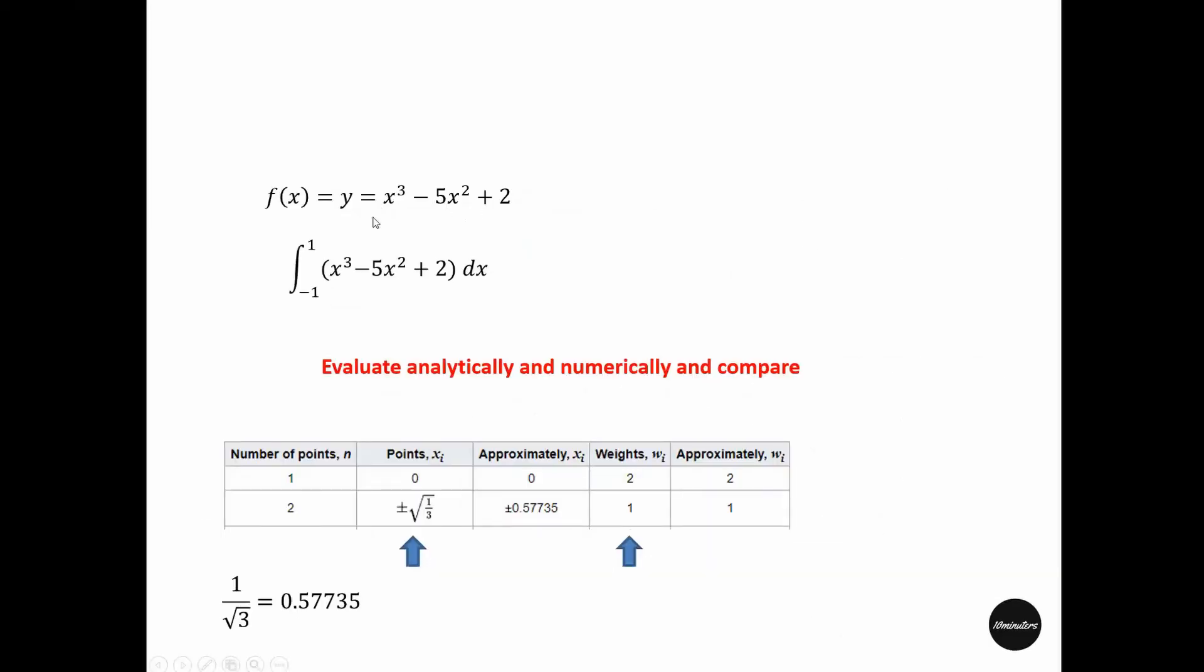If we consider integrating this function as the highest power is 3, only 2 points as we have seen earlier, plus root over 1 by 3 and minus 1 by root over 3 is enough. So to get this integration, we can simply evaluate this function at root over 1 by 3 and as the weight is 1, just ignore it, plus evaluate this function at minus root over 1 by 3 and add them together. And by doing that, you will have the value for this definite integral without ever doing the integration.